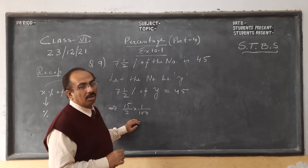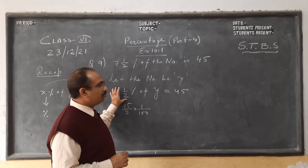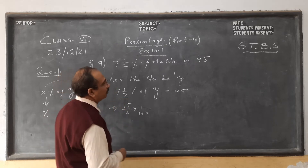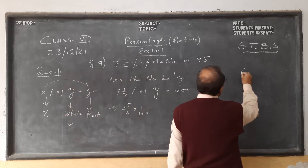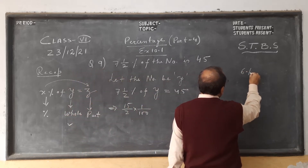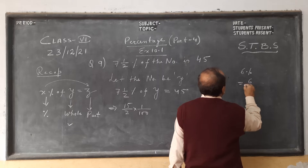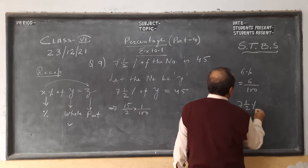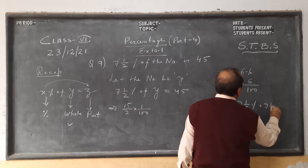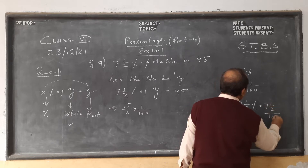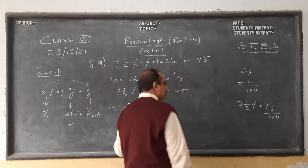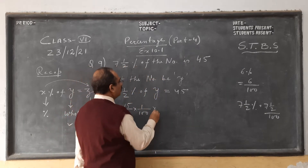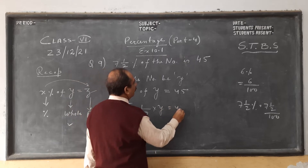So 100 comes down. Percent means denominator is 100. For example, 6 percent means 6 by 100. So 7 and a half percent is 7 and a half upon 100. We write it like this: 7 and a half is 15 by 2, into 1 upon 100, into Y equals 45.